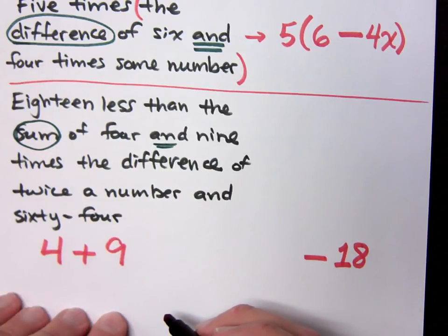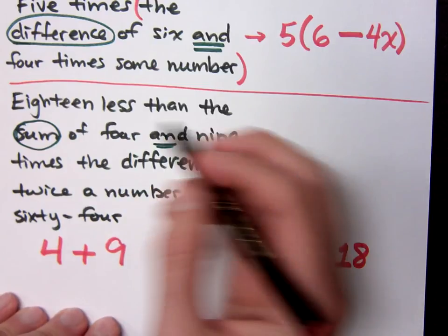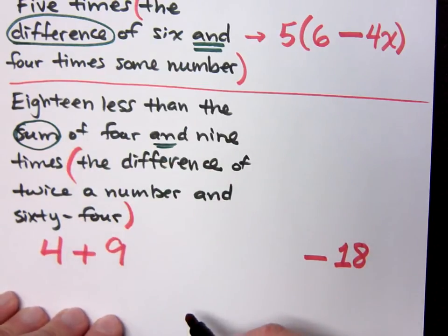Twice the number. In parentheses, 2x. Right, it's nine times the difference. So, nine times the difference of twice the number and 64.